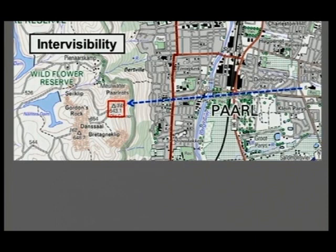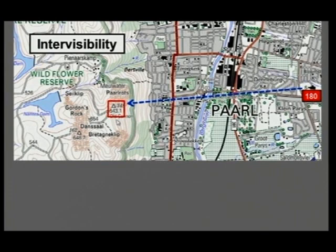Now let's look at the height of the school. How do we determine the height of the school? You will see a contour running just past the school, and the value of that contour is 180 meters. Immediately you can see 180 and 543, and all of you go 'yes, we can see that.' But please, people, it doesn't stop there. We must check if there's something in between that is higher, because if there is, it's going to block the line of vision.